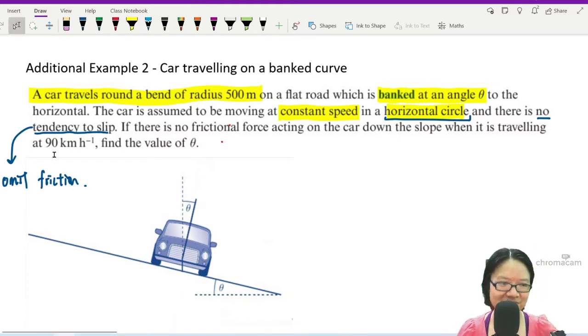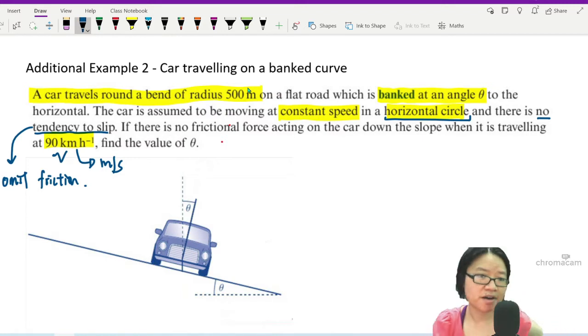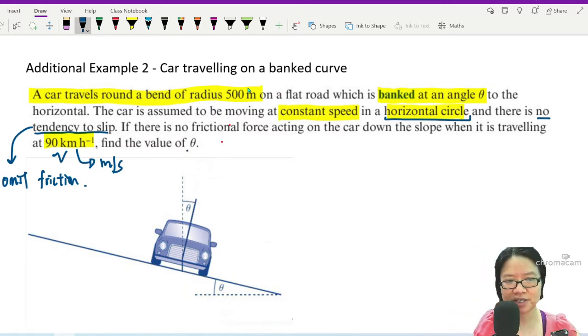If there is no frictional force acting on the car down the slope when it is traveling at 90 kilometers per hour—I see what you do there, I better remember to convert this to meters per second, this is v—find the value of theta. So we are looking for or seeking theta.